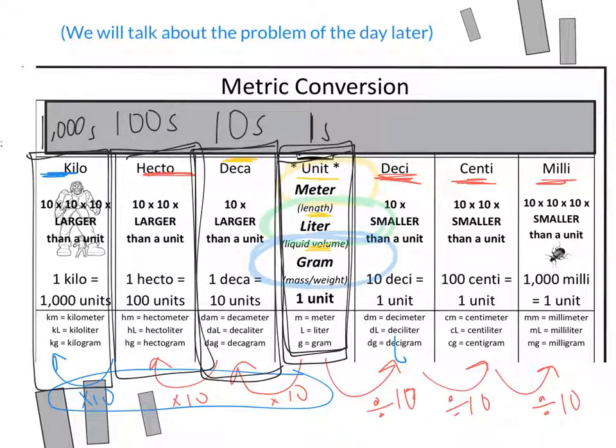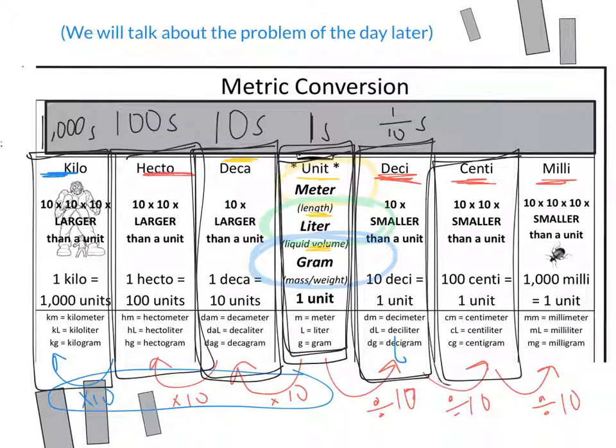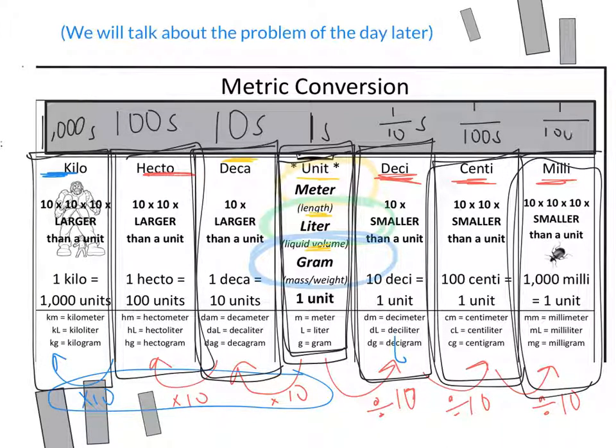Moving to the right, the decis would be like the tenths place. How can I write tenths as a fraction? One tenth. The centis would be like the hundredths place. And then the millis would be the thousandths place. Make sure you write this in your chart so you can see how the metric system is just like the place value chart.